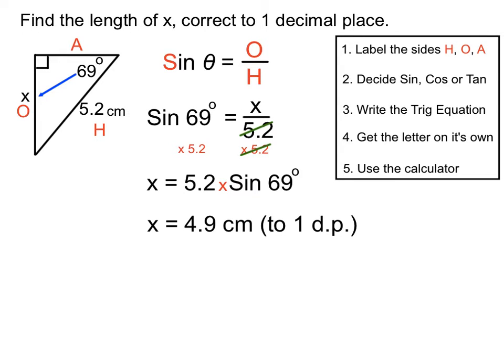So we labelled the sides, chose sine, cos or tan depending on the two sides we had in the question, adjusted to get the letter on its own, and then used our calculator.